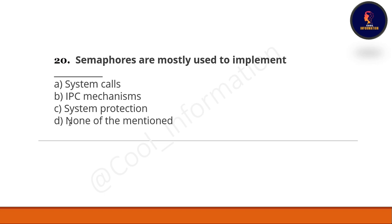Question 20, the last question: semaphores are mostly used to implement — Option A: system calls. Option B: IPC mechanism. Option C: system protection. Option D: none of the above. The correct option is B — IPC mechanism.